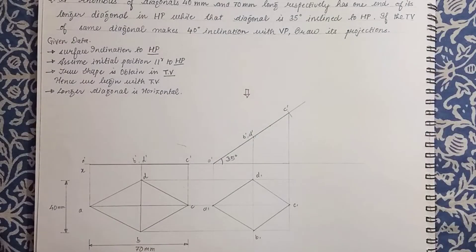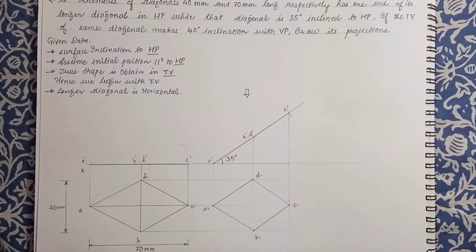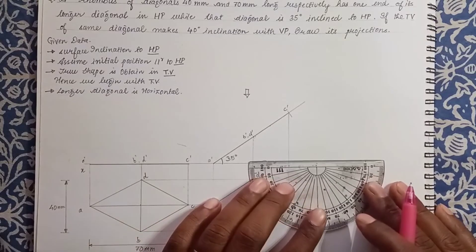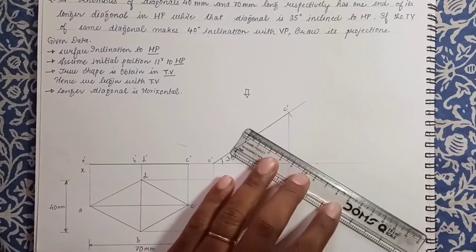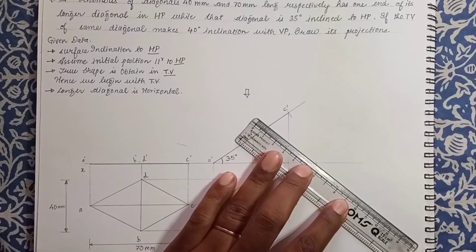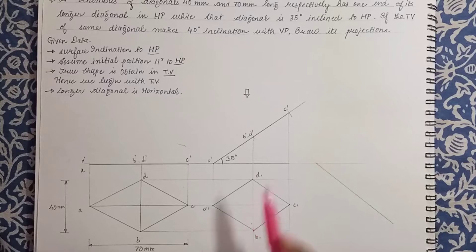Now the second part of the question: the top view of the same diagonal — the diagonal obtained when the surface is inclined at 35 degrees — makes an angle of 40 degrees with VP. We take a suitable distance and draw the line at 40 degrees. Once the surface inclination is applied, the diagonal gets shortened. Let this be a construction line initially and on it we mark point A1-C1, which is the top view of that diagonal.